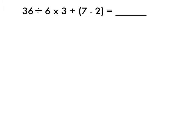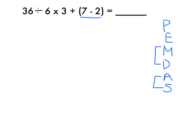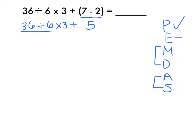Let's try one final problem. I start by making my PEMDAS checklist. I see P for parentheses — grouping symbols — and I notice 7 minus 2 in the grouping symbol, so I solve 7 minus 2, which is 5. I copy the problem exactly, step by step. There are no more parentheses and no exponents. Now it's multiplication or division, whichever comes first from left to right. I see 36 divided by 6 and also 6 times 3. I do 36 divided by 6 first because reading left to right, the division comes first. 36 divided by 6 is 6, and I copy the rest of the problem.